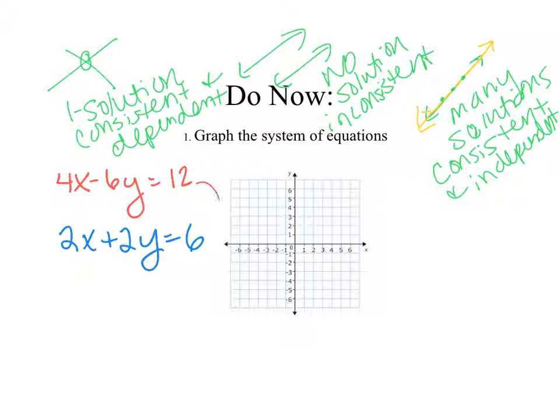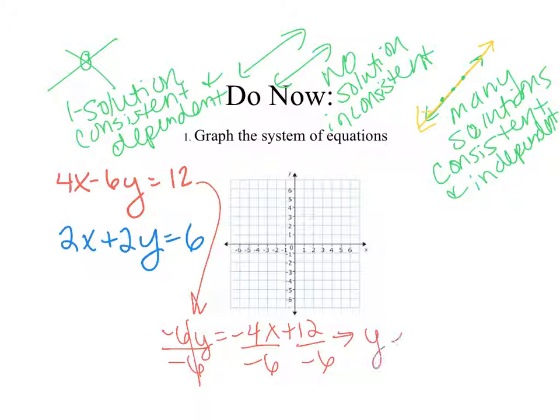So how we're going to do this is we first rewrite the equation isolating y. So we're going to subtract 4x. Then we'll divide all terms by negative 6. So we get y equals 2 thirds x minus 2. That's the first equation.